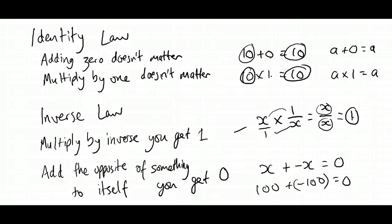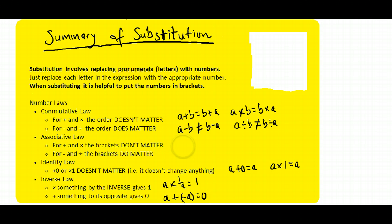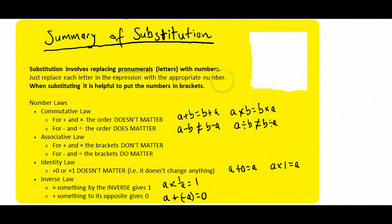Let's do a little summary of what we've learned and take down some notes. Here's a summary of what we've learned about substitution, and there are a few examples. You can write down examples for the associative law from earlier in the video too. Remember, whenever you see something highlighted in yellow, that's something you need to copy down into your workbook. Thanks for watching the video, I hope you enjoyed it.